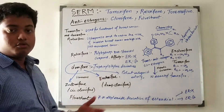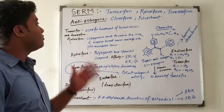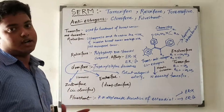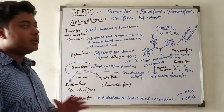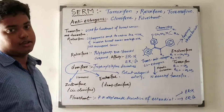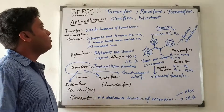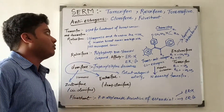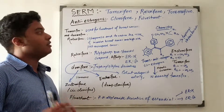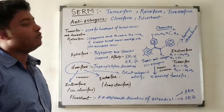We will also study about anti-estrogens. Anti-estrogens are pure antagonists — they never act as agonists. The class of compounds in this category includes clomiphene and fulvestrant.